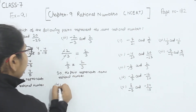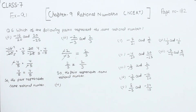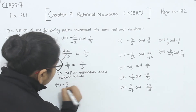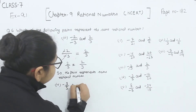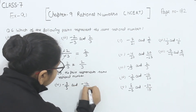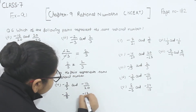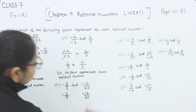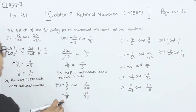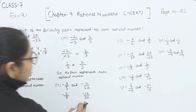Now comes part 4. We have minus 3 by 5 and minus 12 by 20. Minus 3 by 5 is already in the simplest form. We will simplify minus 12 by 20.